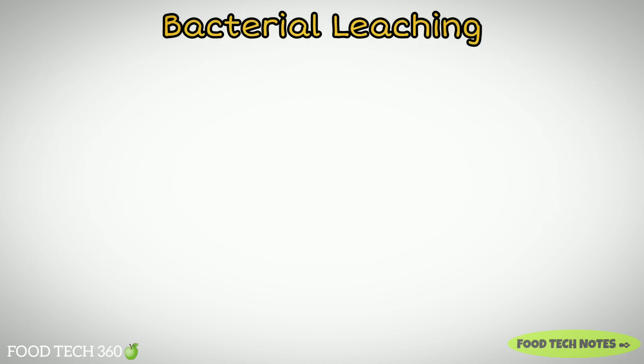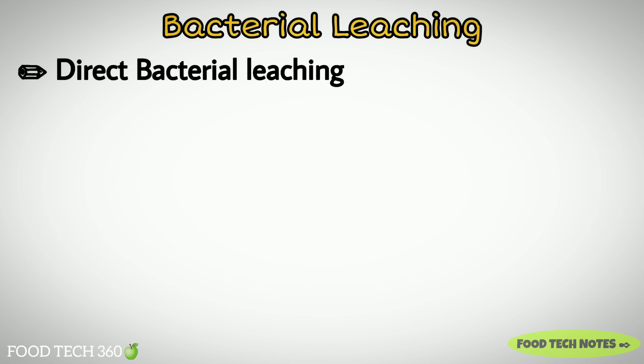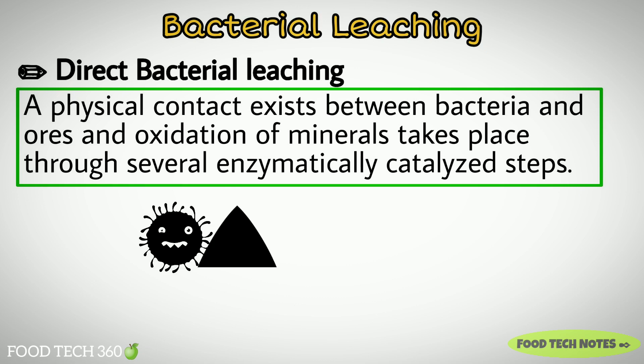Bacterial leaching is of two types: Direct Bacterial Leaching and Indirect Bacterial Leaching. In Direct Bacterial Leaching, a physical contact exists between bacteria and the ores, and oxidation of minerals takes place through several enzymatically catalyzed steps.